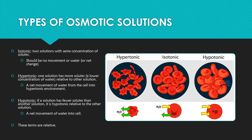If we put blood cells into a hypertonic solution, that means the outside solution has more solutes and a lower concentration of water relative to the inside of the cell. Water is going to move from the inside of the cell into the outside hypertonic solution, and ultimately the cell is going to shrivel, as you can see in this picture, because it's losing water. I want to point out that the solutes themselves are not moving across this membrane — it's water that's moving. These are osmotic solutions, and osmosis is the diffusion of water.